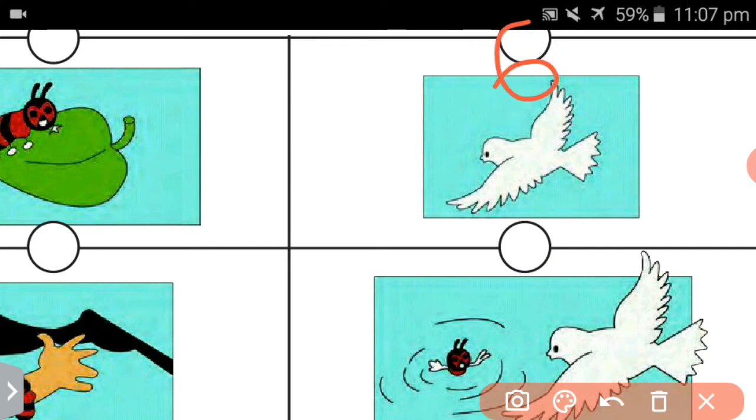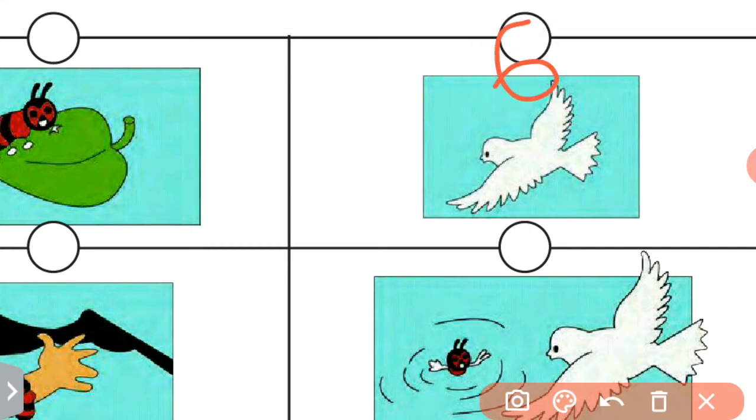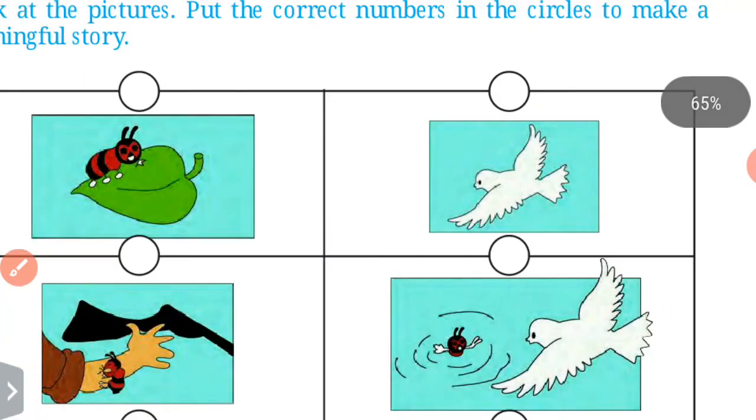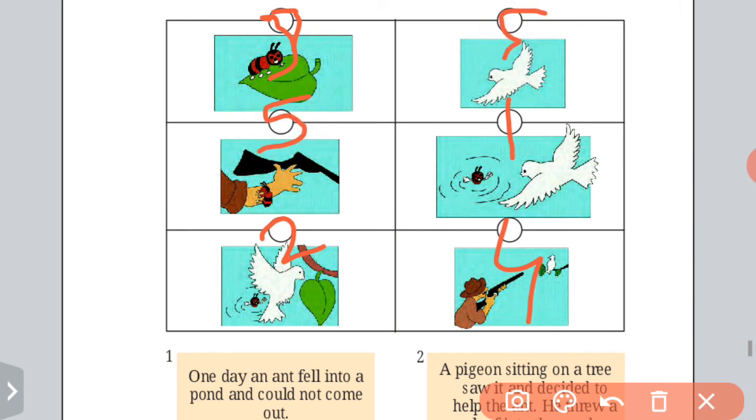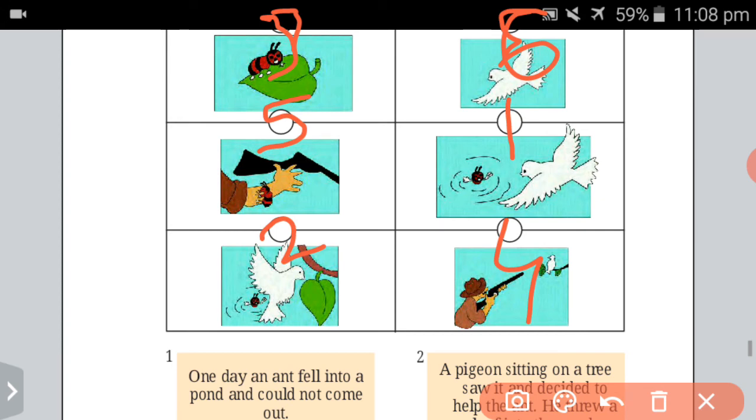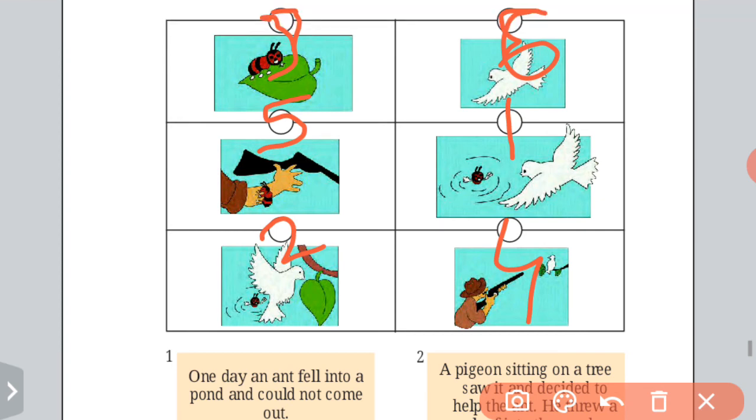So in this way the pigeon and ant are both saved. Both help each other. So you have to put the correct number in the circles.